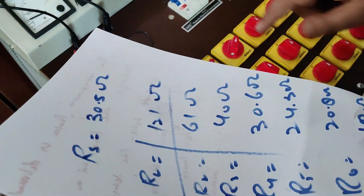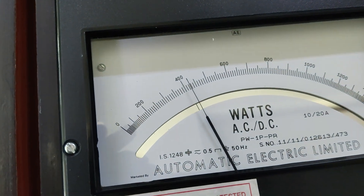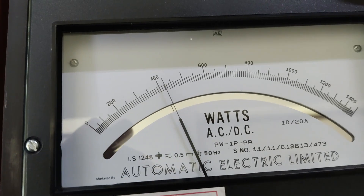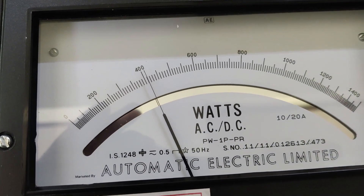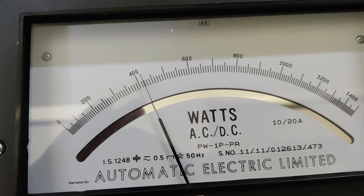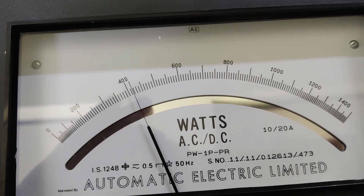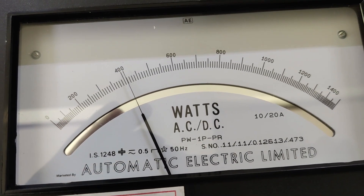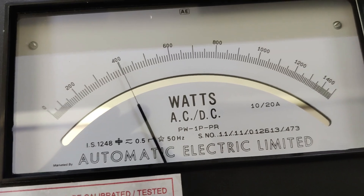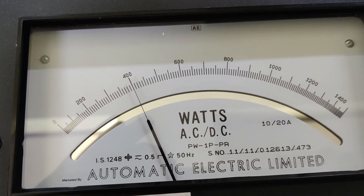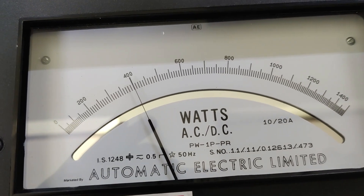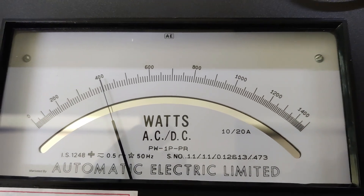If I now give the fifth step — that is 24.3 ohm — you can see the power has gone down. That means it is not the maximum power. If I again increase to step 6, that is 20.8 ohm, the power has gone down further, that is almost below 400 watts. So you can see that after step 4, the power decreases.